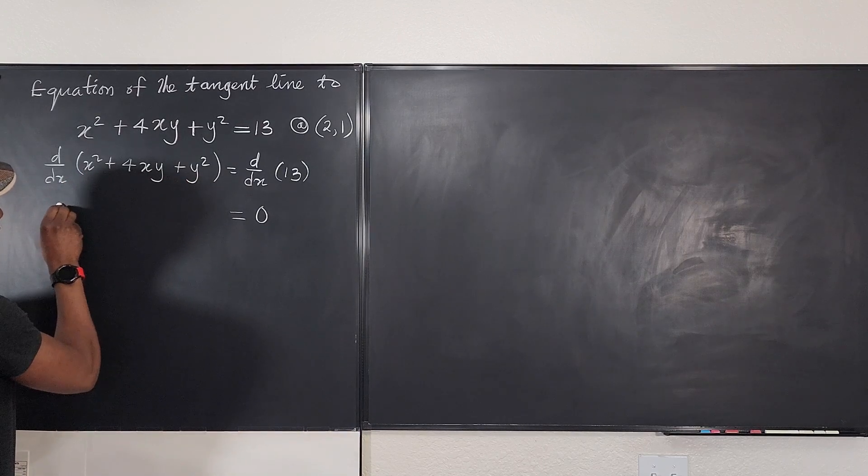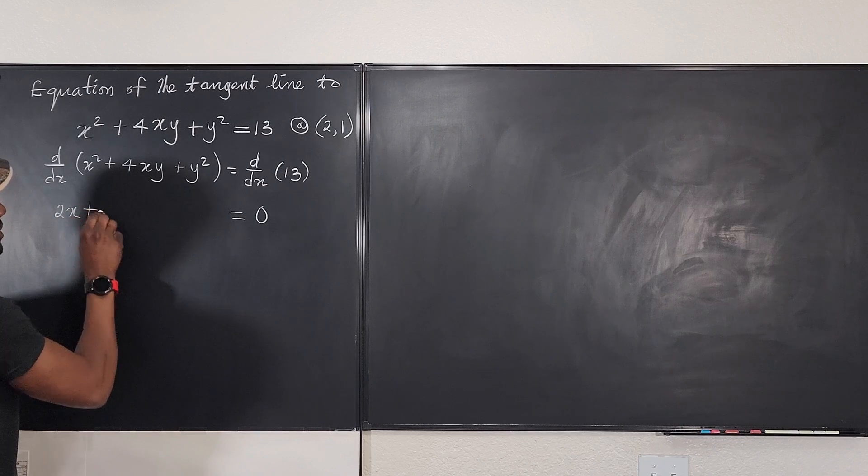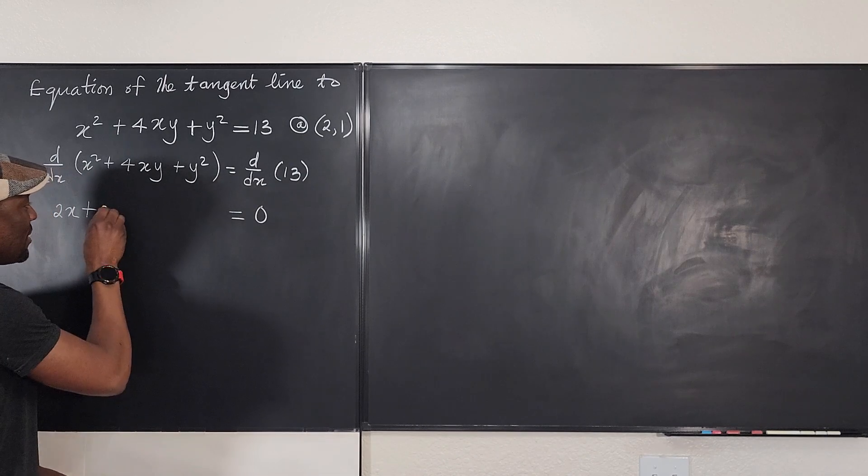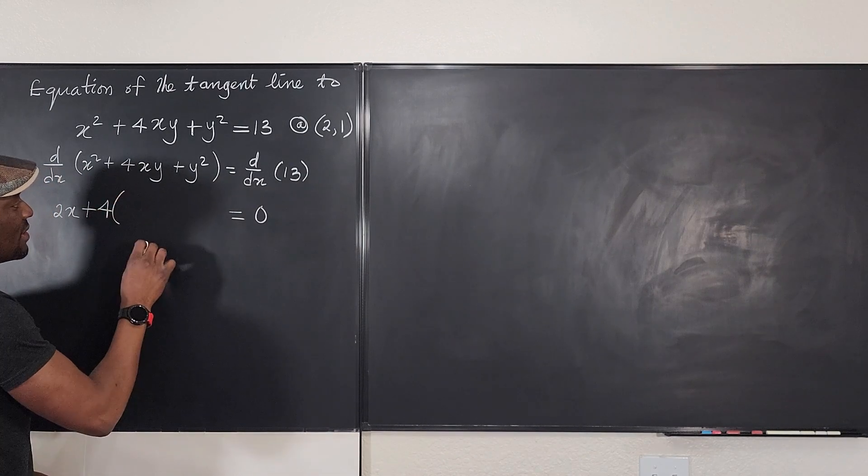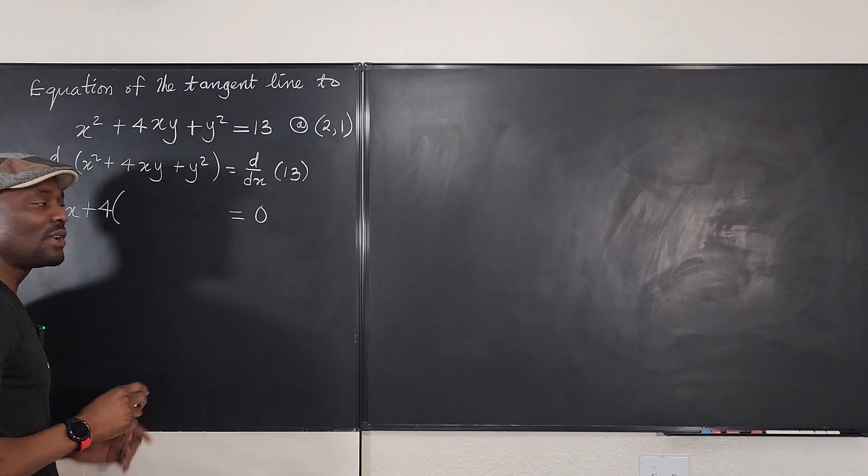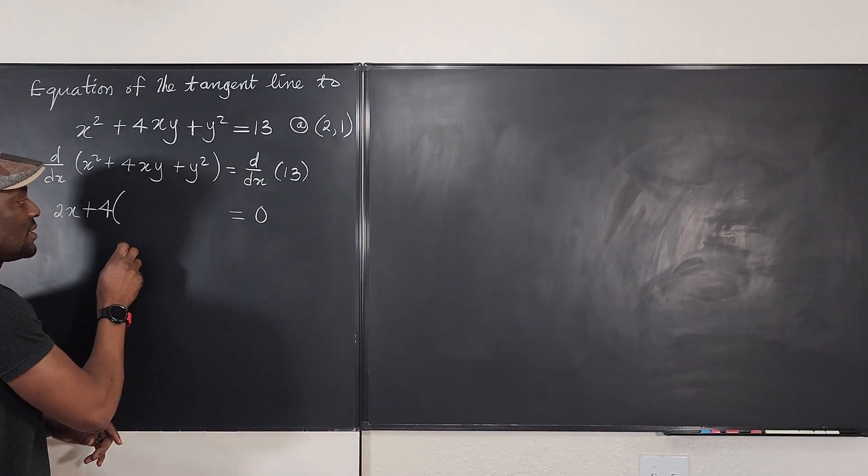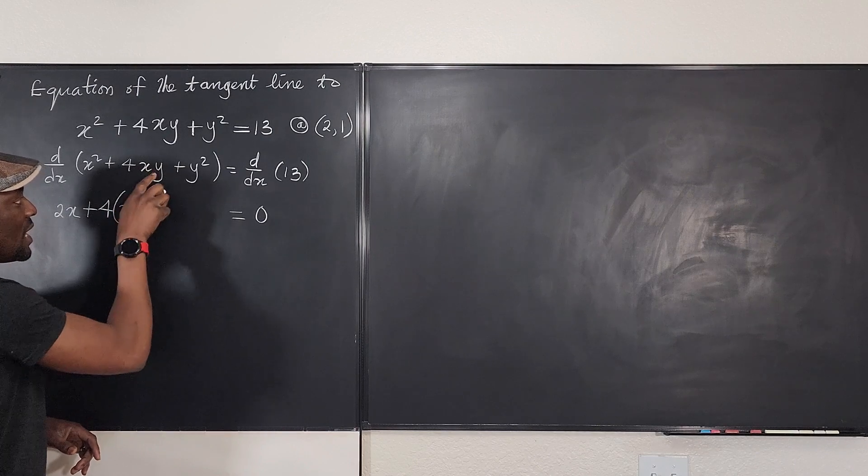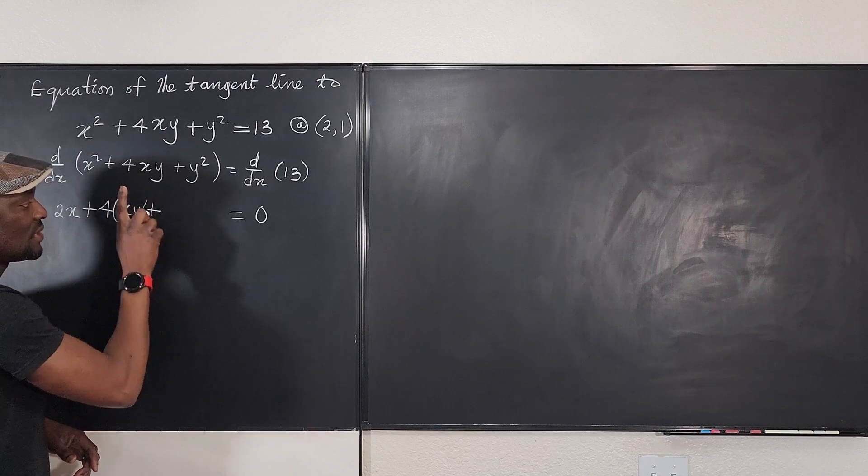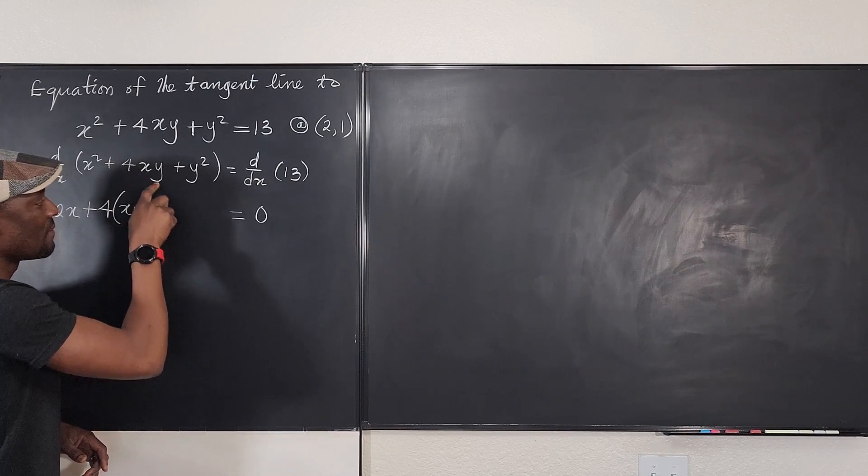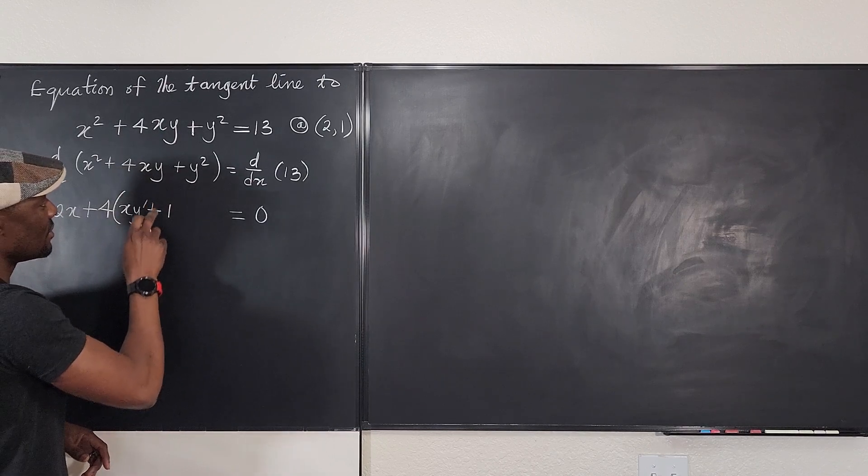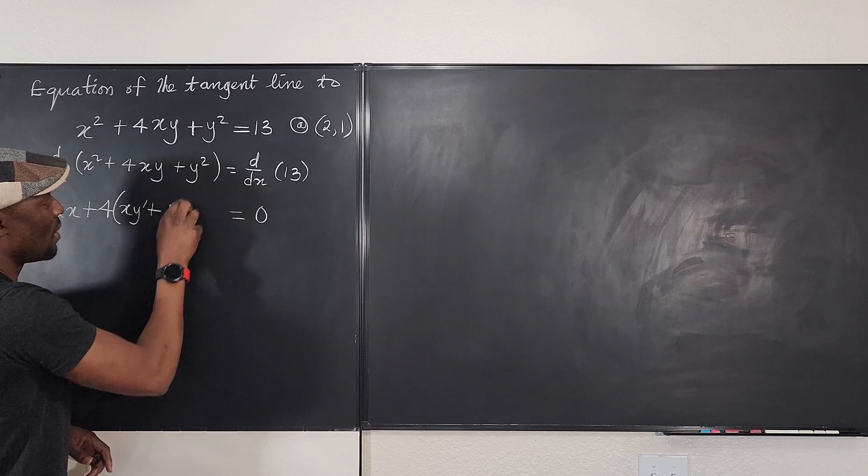If I differentiate x squared, I'm going to get 2x plus, I know this is a product, so I have to use the product rule. What I recommend is keep the 4 outside and open a parenthesis for the product rule. So if I differentiate xy, I'm going to keep the first and differentiate the second. Plus, I'm going to differentiate the first, that's going to be 1, and then I keep this. I differentiate the first, keep the second. It's going to be 1 times y.